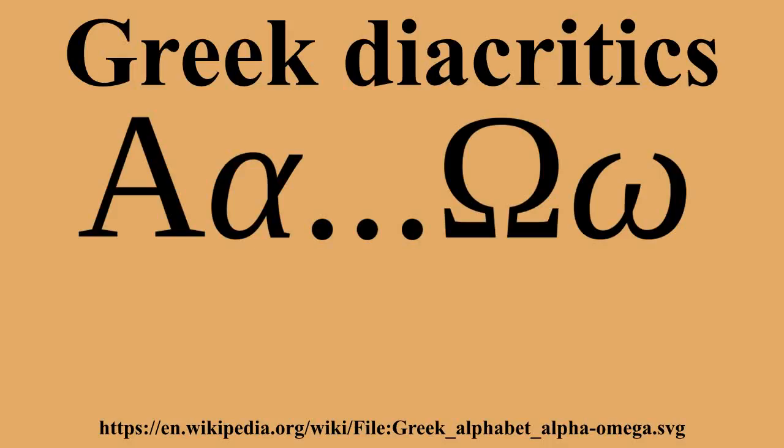In modern Greek, the combination of the acute and dieresis indicates a stressed vowel after a hiatus. In textbooks and dictionaries of ancient Greek, the macron and breve are often used over alpha, iota, and upsilon to indicate that they are long or short, respectively.